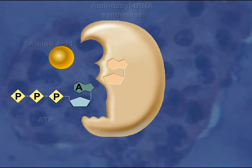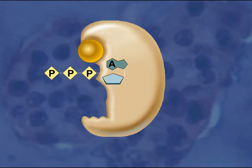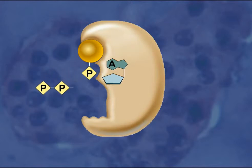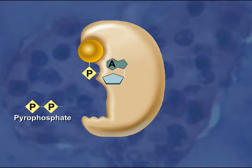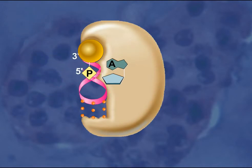A covalent bond is formed between AMP and the carboxyl group of the amino acid, and pyrophosphate is released from the enzyme. A specific tRNA that has an anticodon that corresponds to the amino acid then binds to the synthetase.